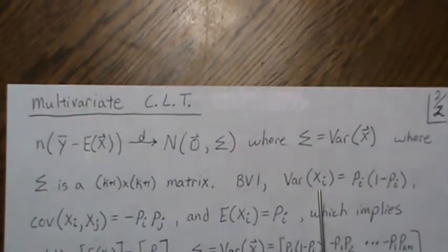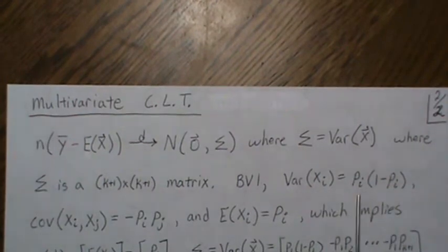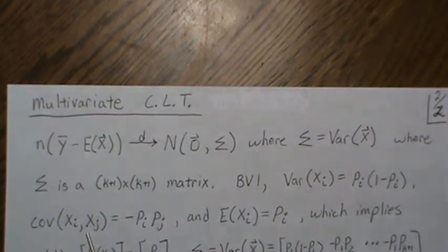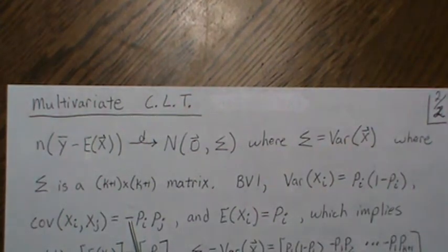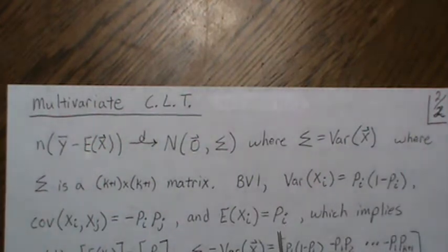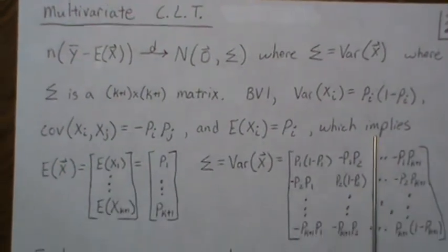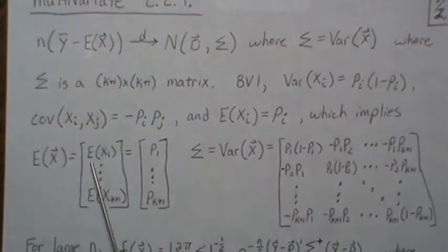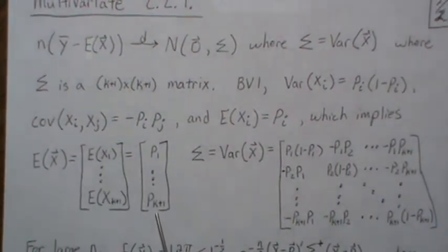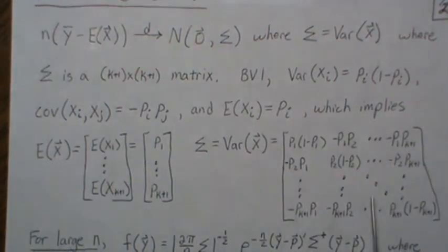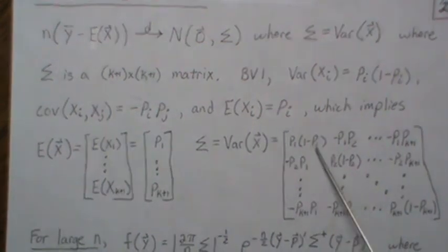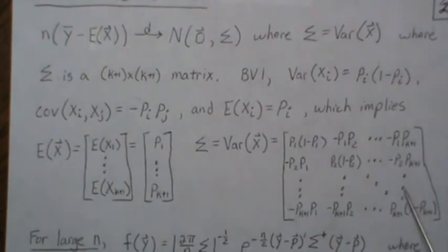We know from BV1 that the variance of any one component is Pi·Qi, or Pi(1−Pi), and the covariance between any two components i and j is −Pi·Pj. The negative makes sense: when one component is high the other is low, because both can't be 1 at the same time — when one is 1 the other is 0, so they are negatively correlated. The mean of each component is Pi. This means the mean of the X vector is the vector [P1, ..., PK+1], and Σ is the covariance matrix with Pi(1−Pi) on the diagonals and −Pi·Pj as the off-diagonal entries. It is symmetric.